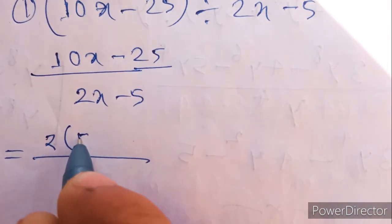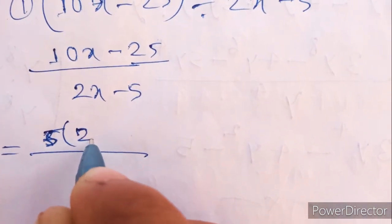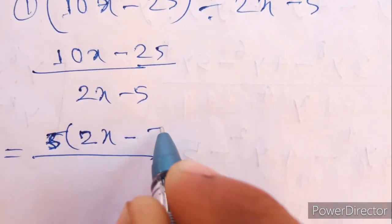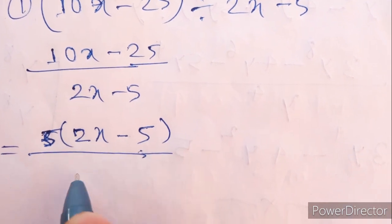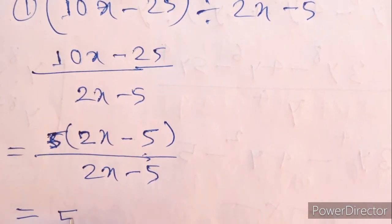Taking common, 2X minus 5 into 5, 25, 2X minus 5 equal 5.